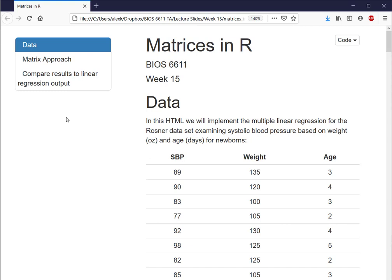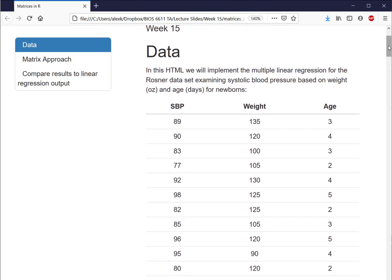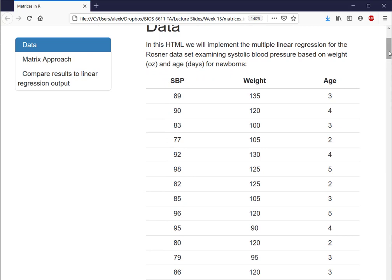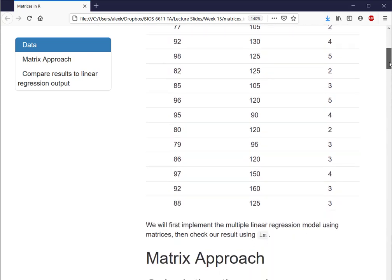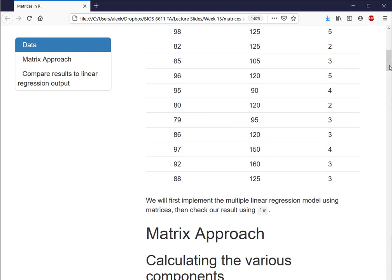So we've switched over to our HTML to look at. And here we can see we have our data set that we had in our slides of our 16 newborns with the outcome of systolic blood pressure based on weight in ounces and age in days. We just have that here summarized as a table, and we'll see how this will work by first implementing the multiple linear regression model using matrices, and then checking our result using the LM function in R.